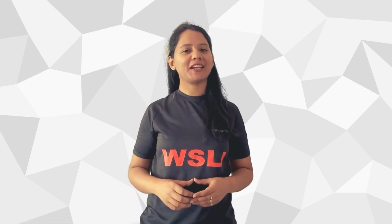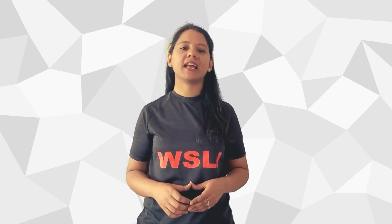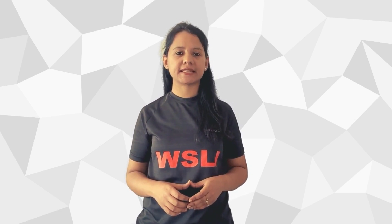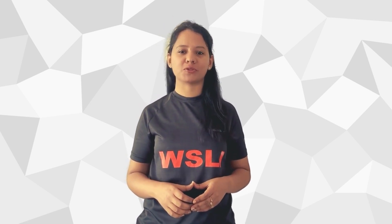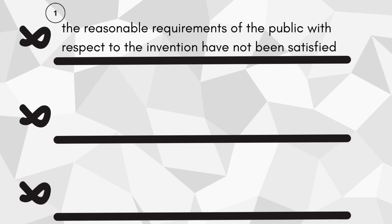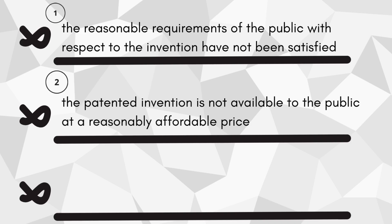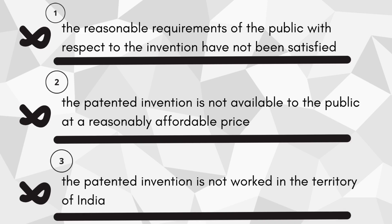As per section 84 of the Indian Patents Act, an application for compulsory license can be filed based on the following three grounds: one, that the reasonable requirements of the public with respect to the patented invention have not been satisfied; or two, that the patented invention is not available to the public at a reasonably affordable price; or three, that the patented invention is not worked in the territory of India.